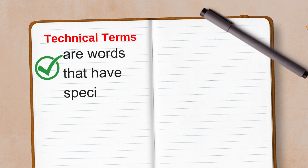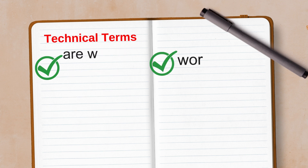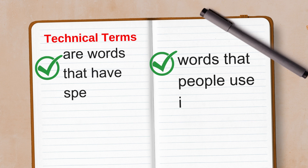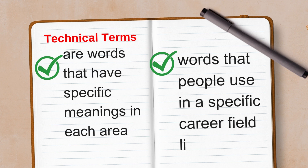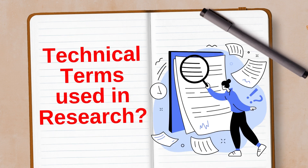First, what are technical terms? Technical terms are words that have specific meanings in each area of study. In other words, they are words that people use in a specific career field like research. So, what are the technical terms or common terminologies used in research?